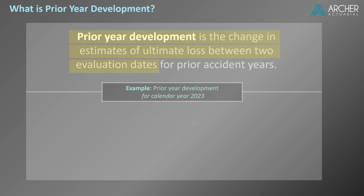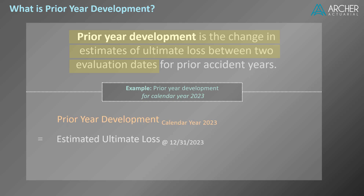In the example for calendar year 2023, prior year development equals estimated ultimate loss evaluated as of 12-31-2023, less the corresponding estimate of ultimate loss evaluated as of 12-31-2022. This formula describes the ultimate loss development for calendar year 2023, but we've ignored the prior year part.